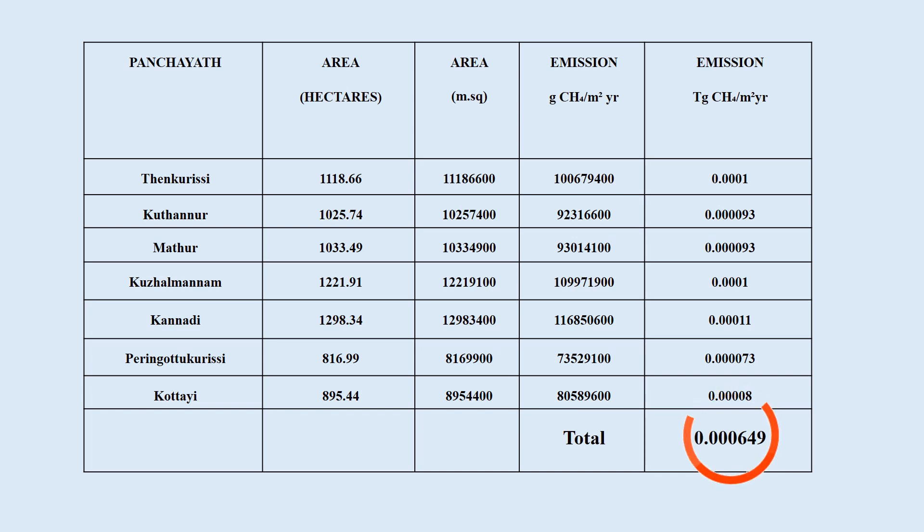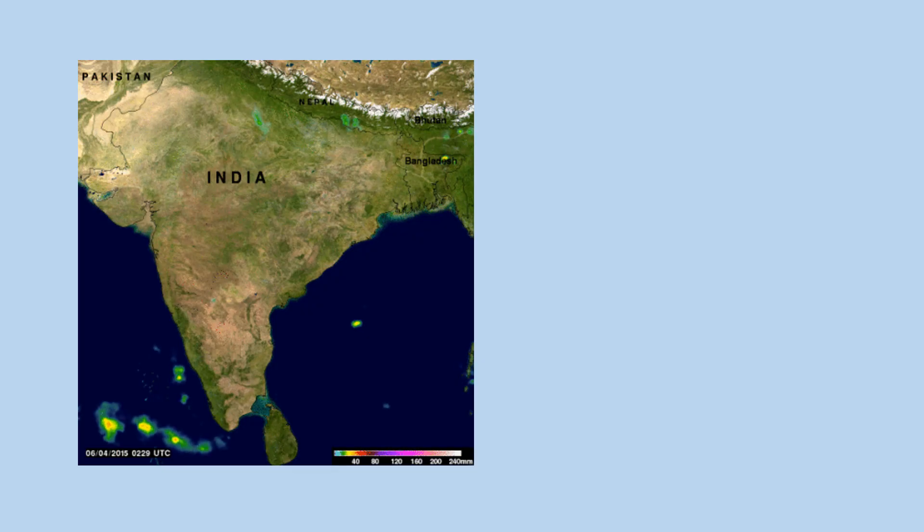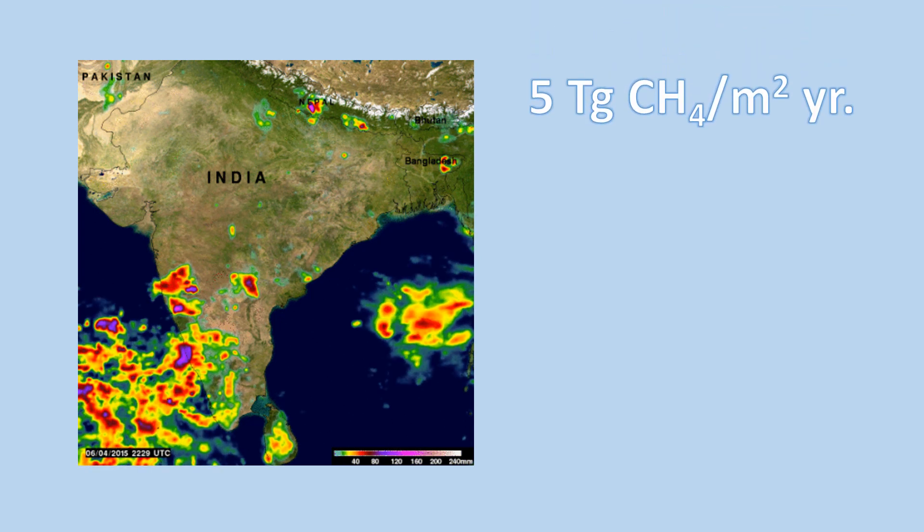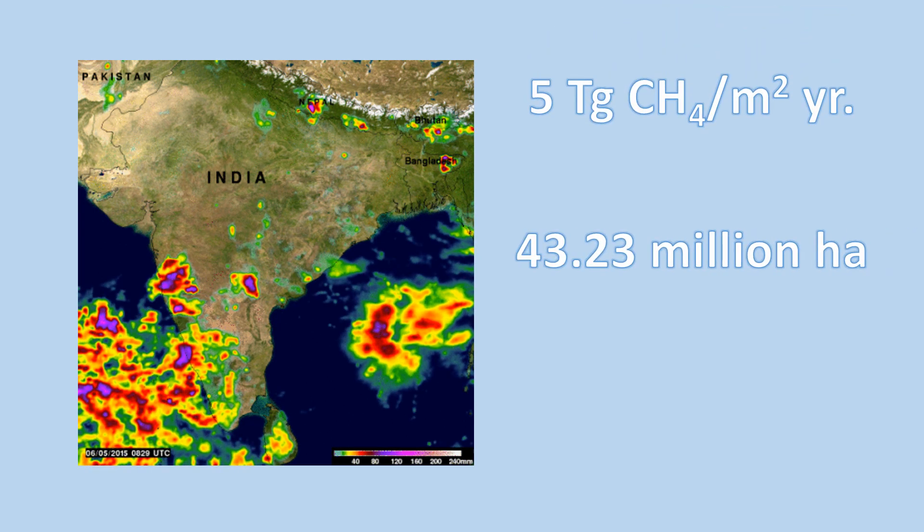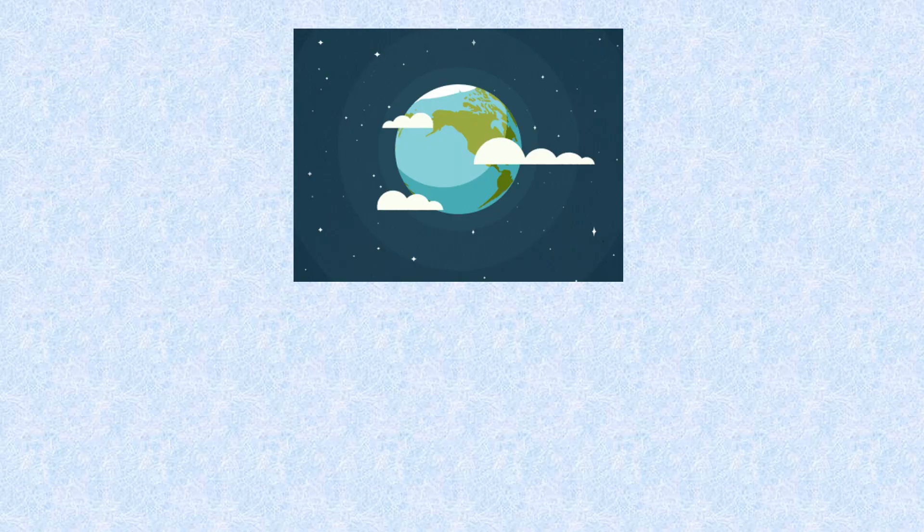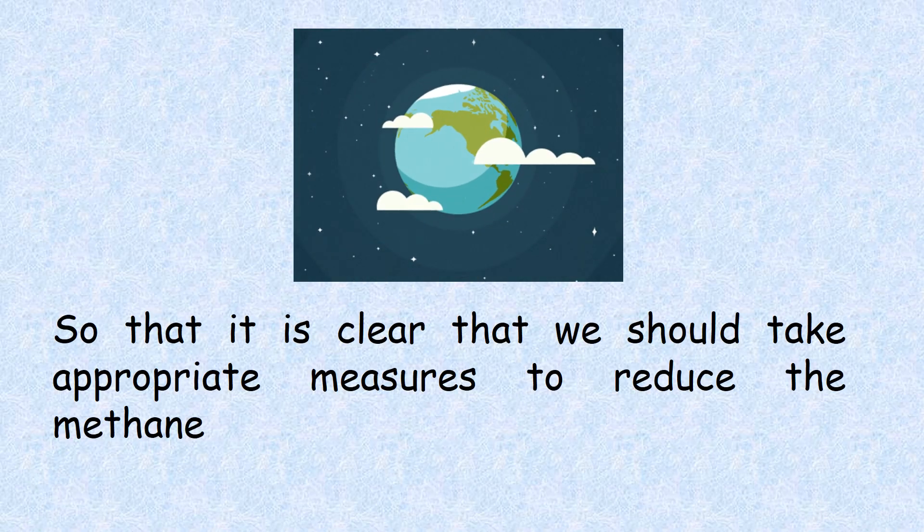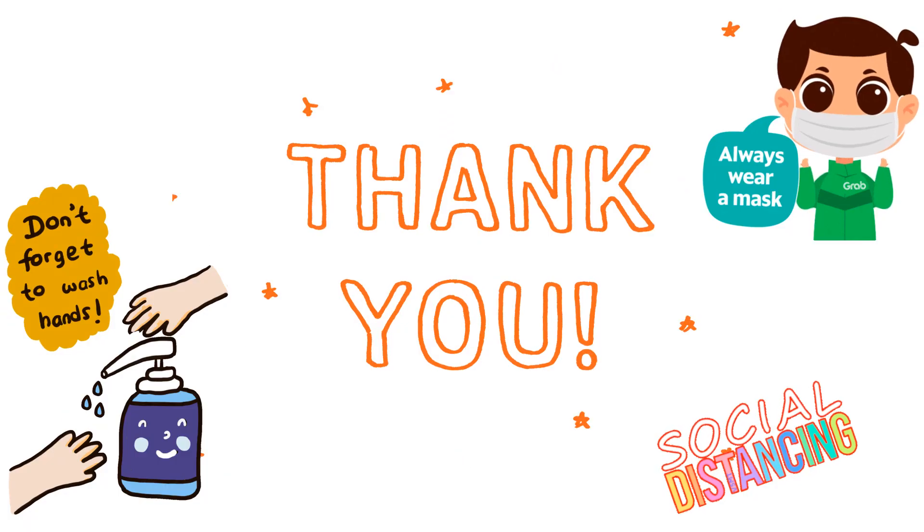As we can see in the table, the total emission from the study area was 0.000649 teragram methane per meter square year. This might be a small amount but if we took the entire paddy field across India, it might be about 5 teragram methane per meter square year for 43.23 million hectares of paddy field. So it is clear that we should take appropriate measures to reduce the methane emission from paddy field and reduce global warming.